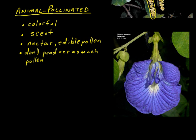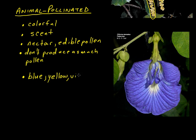Generally speaking, you can tell right off the bat whether a flower is animal-pollinated or wind-pollinated. The showier the flower, the smellier the flower, you can virtually guarantee that it is animal-pollinated. Blues, such as this flower, and yellow and violet type colors usually indicate insect pollinators like butterflies in this case. Scented flowers also almost exclusively attract insects, because birds don't have much of a sense of smell.